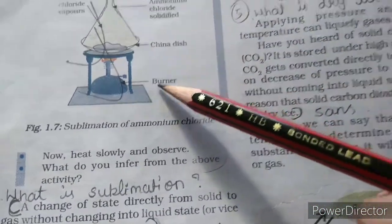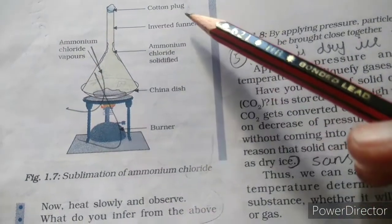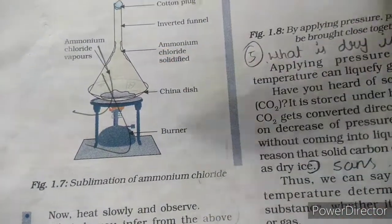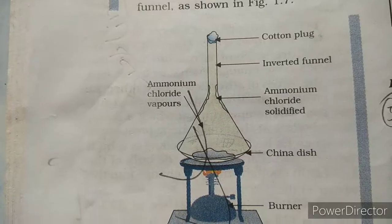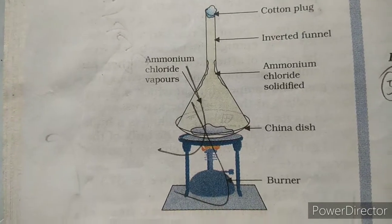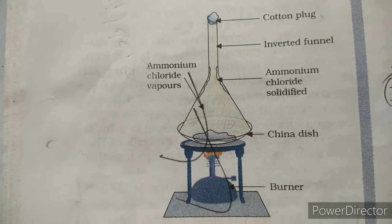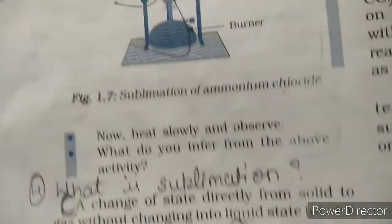When you heat ammonium chloride or camphor, you can see the ammonium chloride gets solidified on the sides of the funnel — demonstrating sublimation.